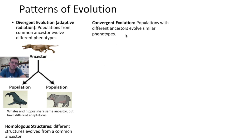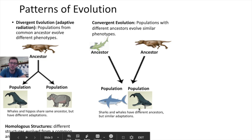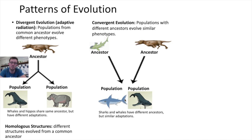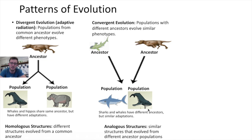The opposite of divergent evolution is convergent evolution, which occurs when populations with different ancestors evolve similar phenotypes. Take for example the whale and the shark population. Whales and sharks have significantly different ancestors — sharks are related to fish and whales are a type of mammal — but because their ancestors found themselves in similar environments, they evolved very similar adaptations. We would say these similar adaptations are called analogous structures: similar structures like tails and fins that evolved from different places.